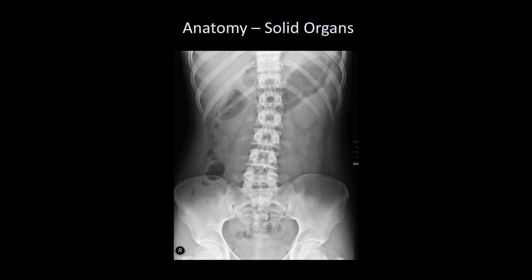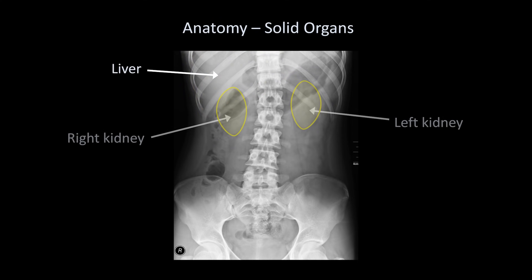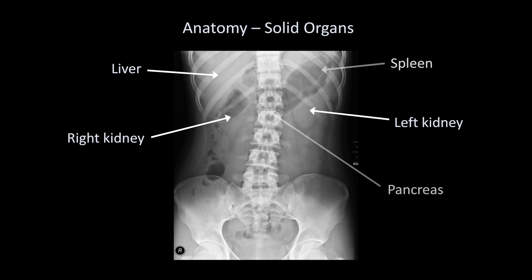Next, let's look at the normal anatomy of solid organs on abdominal x-ray. As mentioned earlier, the solid organs are all poorly visible on plain radiographs. In this case, we can identify the location of the liver. The kidneys are a little more subtle, but a normal spleen and pancreas will not typically be visible on plain films.